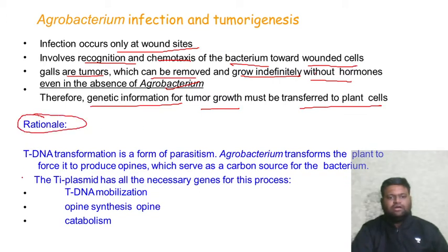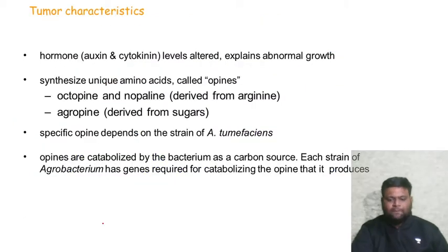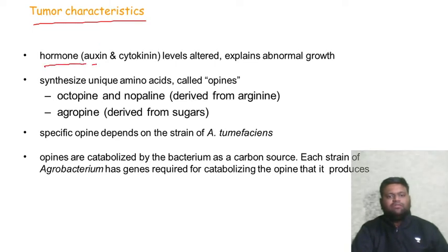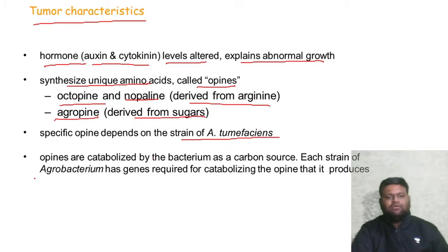T-DNA transformation is a form of parasitism: Agrobacterium transforms the plant cell to force it to produce opines, which serve as a carbon source for the bacterium. The Ti plasmid has all the necessary genes for this process, including T-DNA mobilization, opine synthesis, and opine catabolism. Tumor characteristics include altered levels of auxin and cytokinin, explaining abnormal growth. The tumors synthesize unique amino acids called opines — octopine and nopaline are derived from arginine, and agropine is derived from sugars.